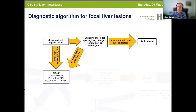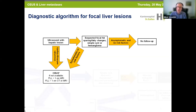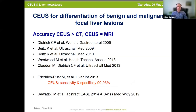Let me propose a diagnostic algorithm for focal liver lesions. We have a hepatic lesion and suspect focal fat sparing, fatty changes, simple cyst, or hemangioma. If the patient has no risk factors and is asymptomatic, a diagnosis can be made on grayscale ultrasound alone. But if you have symptomatic patients or risk factors, you need a contrast imaging modality — for example, contrast-enhanced ultrasound.